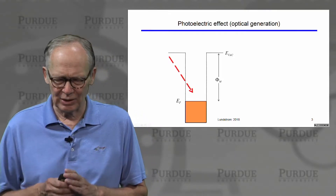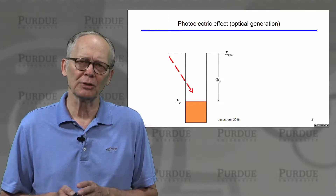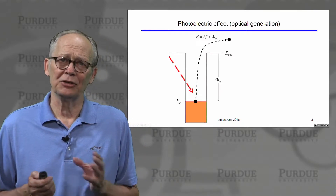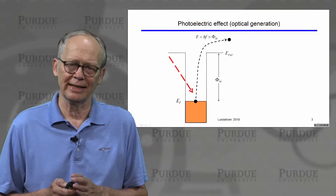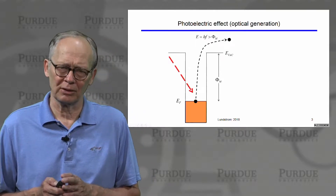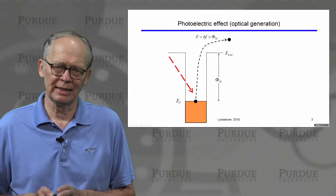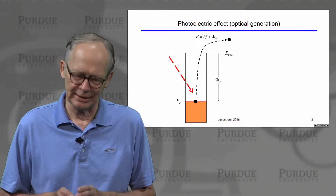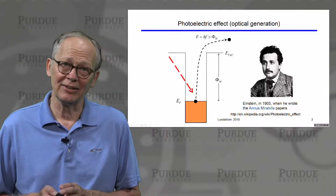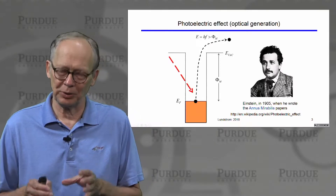Let's begin by asking what light could do. This goes back to the photoelectric effect. It was observed that if you shine light on a metal and the light has enough energy — meaning if its frequency is high enough, if the photon energy h-nu is above the work function of a metal — then we can eject electrons out of the potential well into the vacuum and detect the current. This is called the photoelectric effect, explained in 1905 by Albert Einstein, using the idea that waves behave as particles.